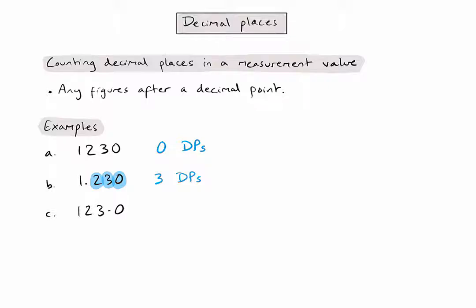In this third example, I can see after the decimal point there is one figure, even though it's a zero, it still counts. So in this case, there's only going to be one decimal place.